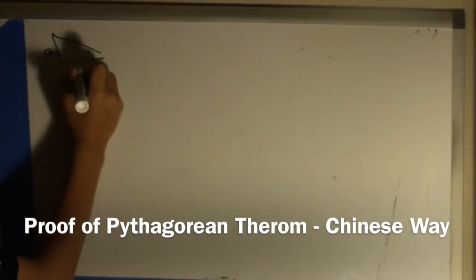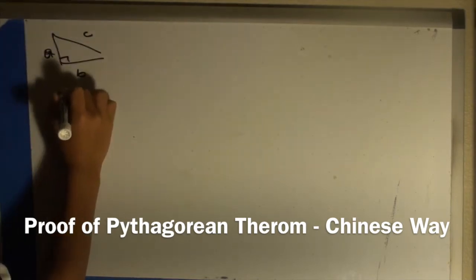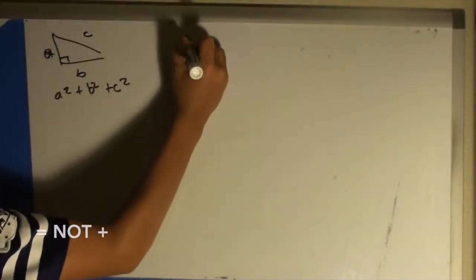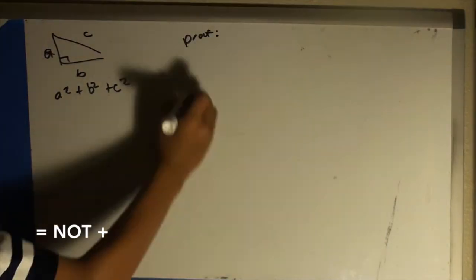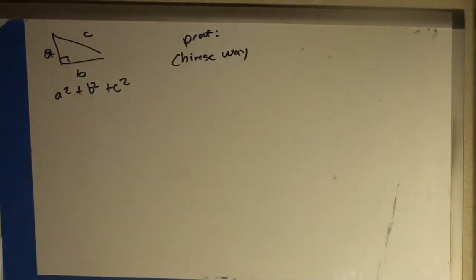The Pythagorean theorem is the theorem that defines the length of the legs of a right triangle. The theorem is a squared plus b squared equals c squared. One way to prove this is the Chinese way.